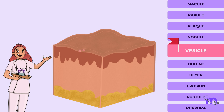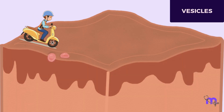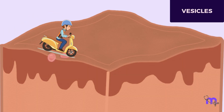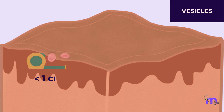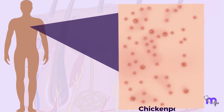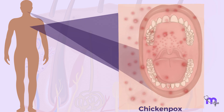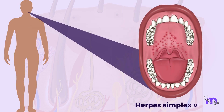Moving on to small fluid-filled blisters called vesicles that appear on the skin and oral mucosa. These are less than one centimeter in diameter. Chicken pox is a condition that causes vesicles on the skin, while the herpes simplex virus can cause them in the oral mucosa.